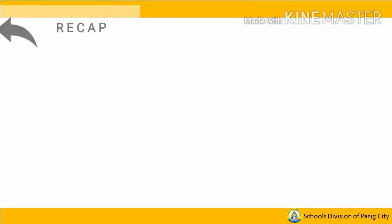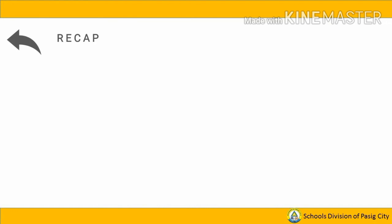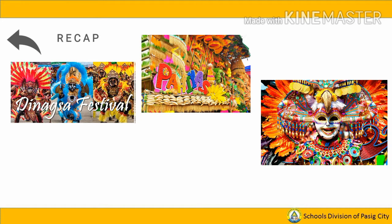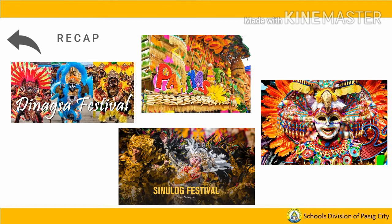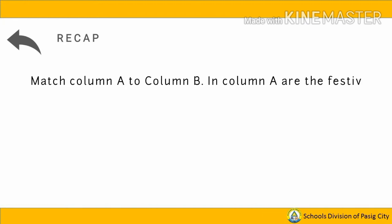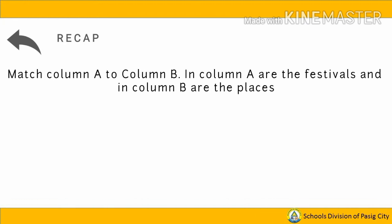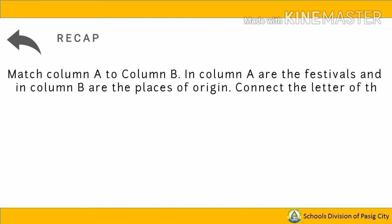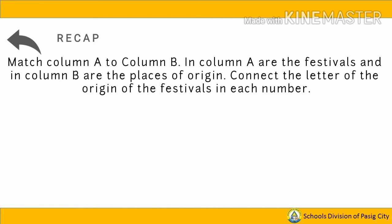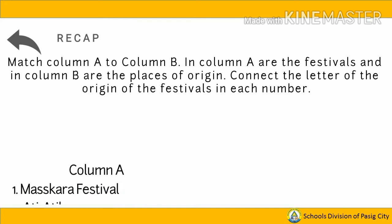Before we proceed to our lesson, let's have a short review about our past lesson. We have learned about the different festivals we celebrate here in the Philippines. You have to match Column A to Column B. In Column A are the festivals and in Column B are the places of origin. Connect the letter of the origin of the festivals in each number. Column A: 1. Mascara Festival.